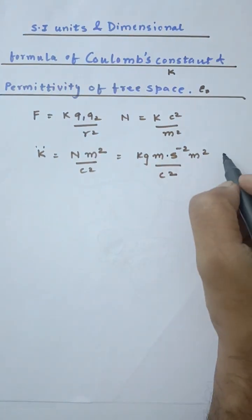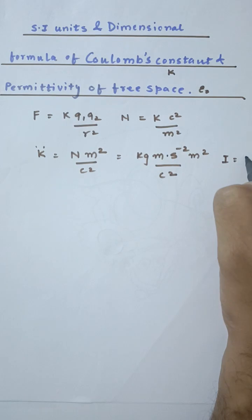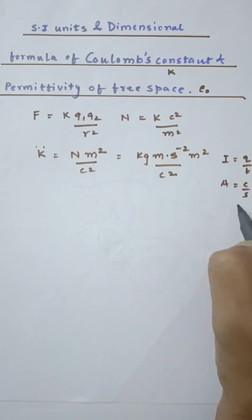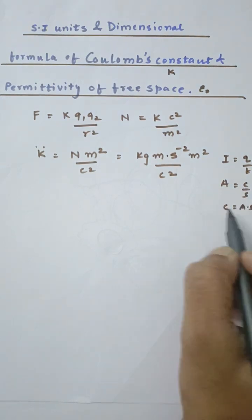Now, we are very well aware that electric current is the flow of charges, that is charge upon time. So ampere = Coulomb/second. Coulomb can be written as ampere into second. That is what I'm going to use here.